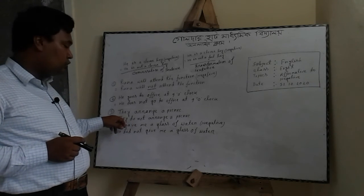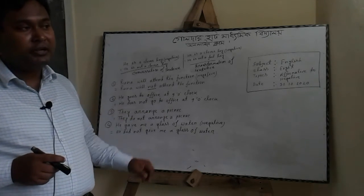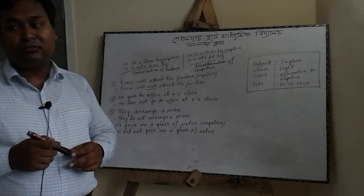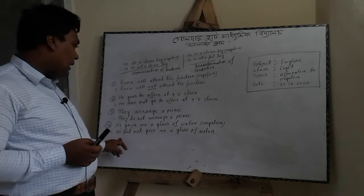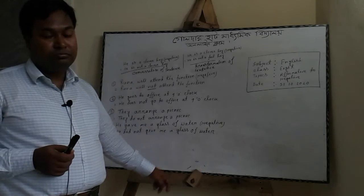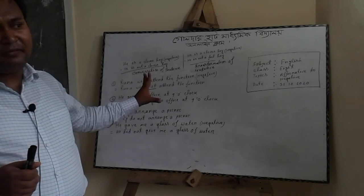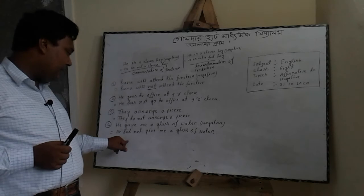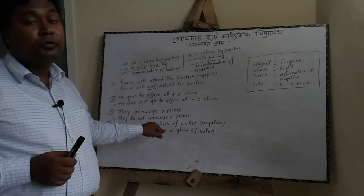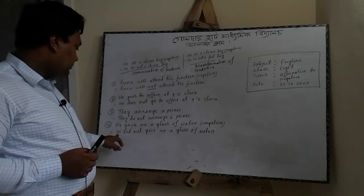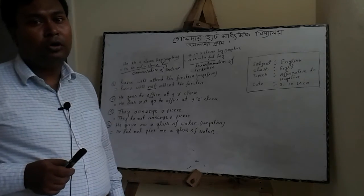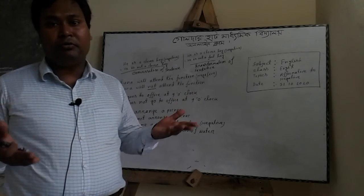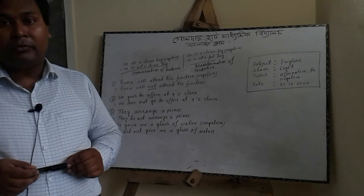Here 'they' is third person plural, so I use 'do not' to transform it into negative. In the fourth sentence: 'He gave me a glass of water.' I write: 'He did not give me a glass of water.' Here 'gave' is the past form of the verb, so I use 'did not' to transform it into negative, and I use the base form of the verb — 'give.' Hope you understand how to convert an affirmative sentence into negative.